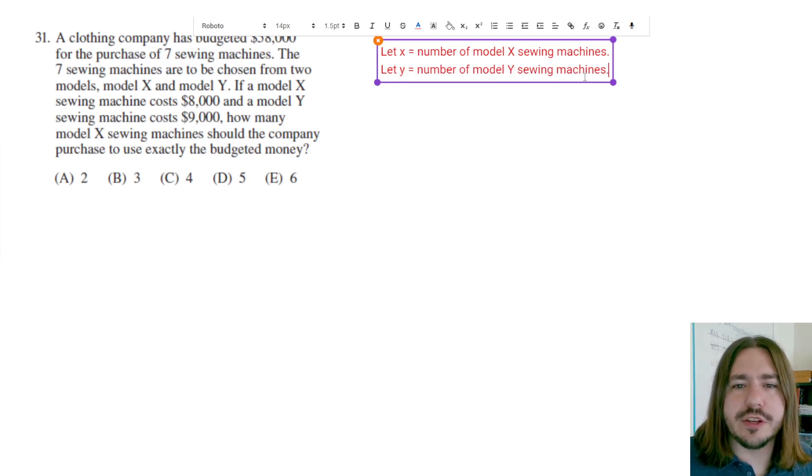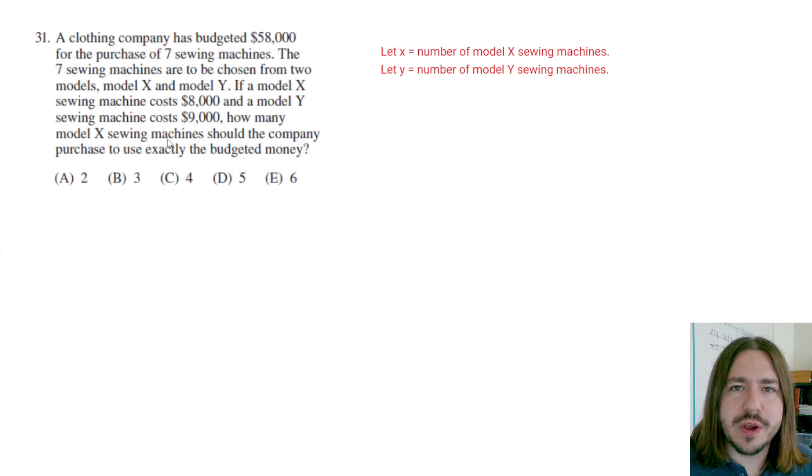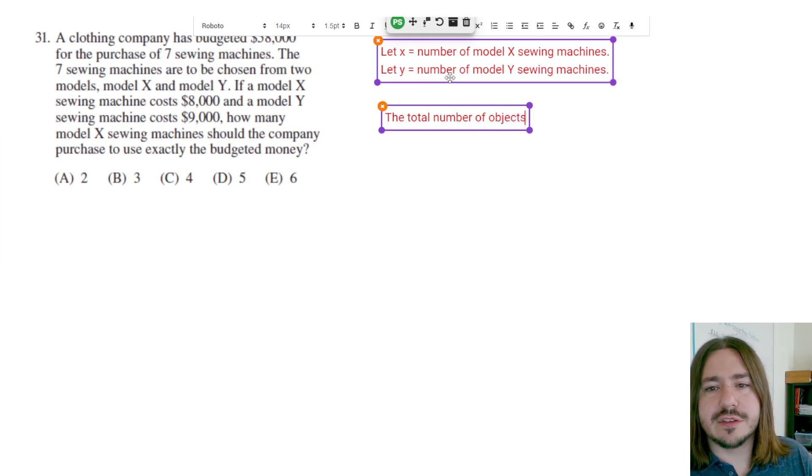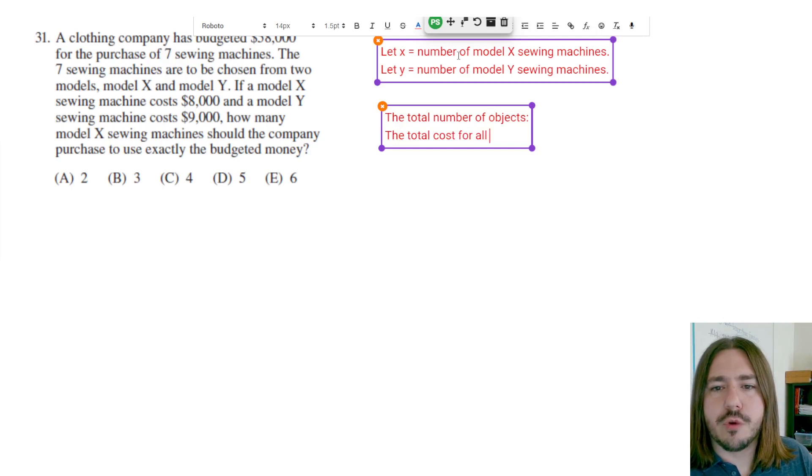So what we're going to do is write two equations, and a lot of times these system of equations problems are going to be worded very similarly, where you'll write one equation to represent the total number of objects, and the second equation will reference the total cost of buying everything that you want to buy. So the first equation is going to reference the number, the total number of objects, in this case sewing machines. And then the second equation will be the total cost for all objects. I'm just using that as a general term; this specific problem is talking about sewing machines.